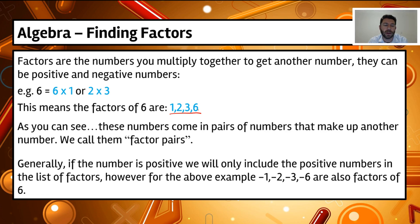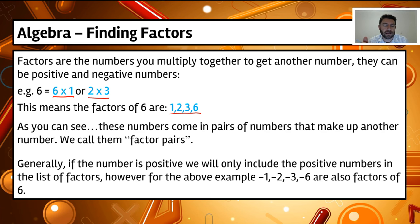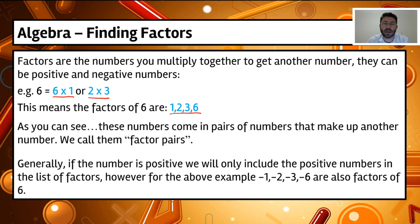They're the numbers that when we combine and multiply together. As you can see, these numbers come in pairs that actually make up that number, and we're going to call those factor pairs. So 6 and 1, and 2 and 3, are the factor pairs of 6. Generally, if the number is positive, we only include the positive numbers in the list of factors. However, you could also include minus 1, minus 2, minus 3, minus 6 as factors, because multiplying two negatives gives a positive. But in most cases when looking for the highest common factor, it's generally a positive number.